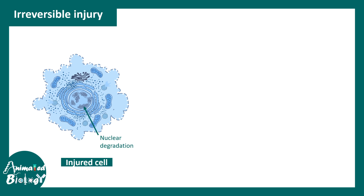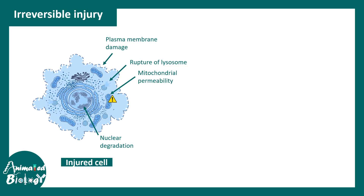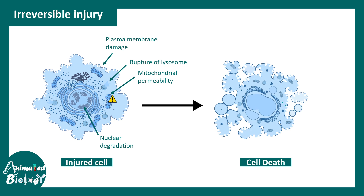In irreversible injury, nuclear degradation occurs — not only condensation, but the nucleus becomes totally degraded. Nuclear material, DNA and RNA, is totally degraded by endonuclease activity. There is rupture of lysosomes causing leakage of acid hydrolases into the cytosol, plasma membrane damage, mitochondrial permeability problems with loss of membrane potential, and highly compromised ATP production — all potentially leading to apoptosis or necrosis.